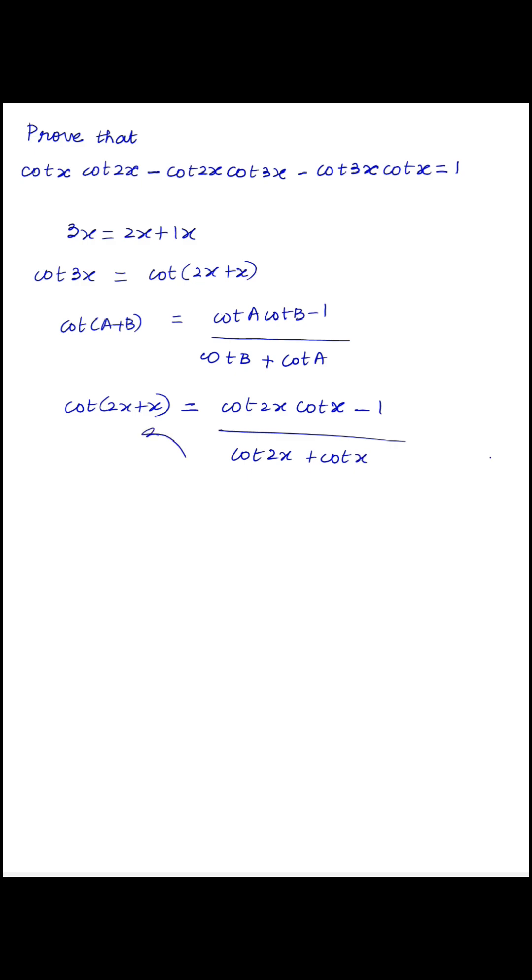If you cross multiply, you will get cot 3x into cot 2x plus cot x, that is equal to cot 2x into cot x minus 1.